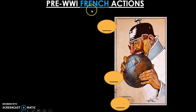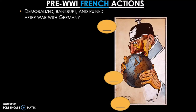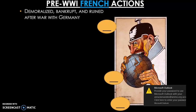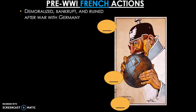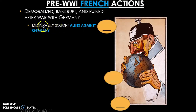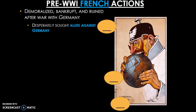Make sure you annotate France. Let's take a look at France's actions. Demoralized — meaning heartbroken and upset — also bankrupt and ruined after the war with Germany, France had very few options. They desperately sought allies against Germany. They had been hurt after this war and realized they were no longer strong enough to protect themselves. Go ahead and annotate which main background cause France is using — militarism, alliances, imperialism, or nationalism. Put the letter of your choice now.